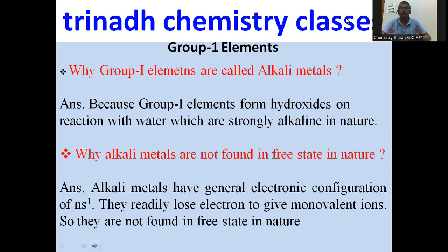If you have any doubts, please post in the comment section below. The reason is the alkali metals have a general electronic configuration of ns1. They readily lose this electron to get octet configuration and form monovalent ions. If they readily form monovalent ions, they are not found in nature in free state.